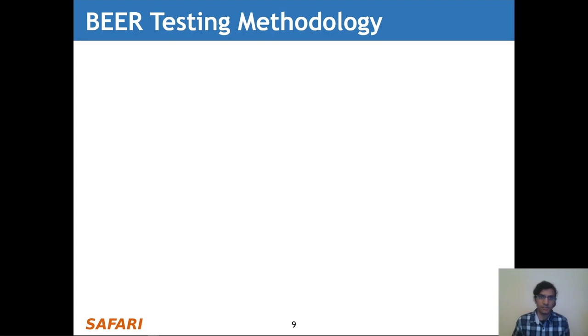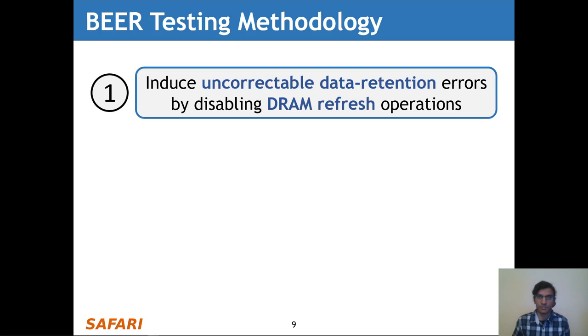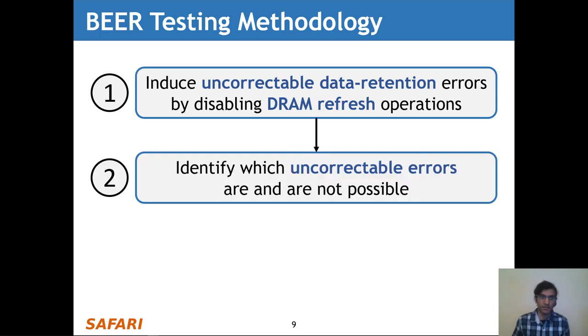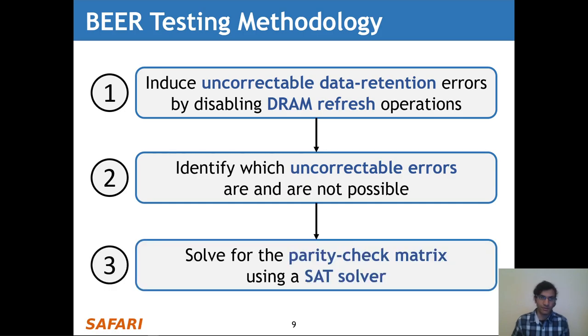Using this principle, we develop BEER, which is a new three-step testing methodology that first induces uncorrectable data retention errors by disabling DRAM refresh operations, then identifies which uncorrectable errors are and are not possible, and finally solves for the parity check matrix responsible for the observed errors using a SAT solver. Let's look at each step in more detail.